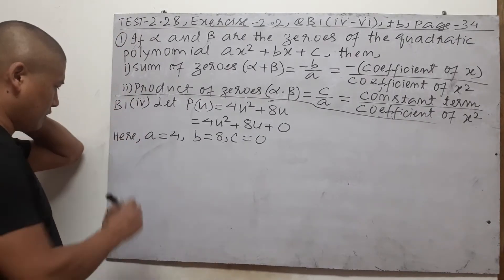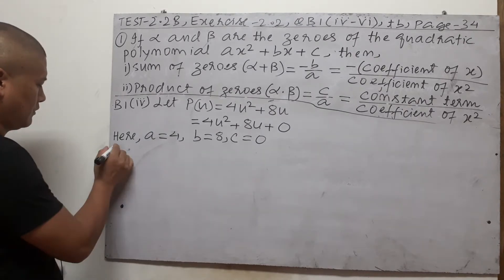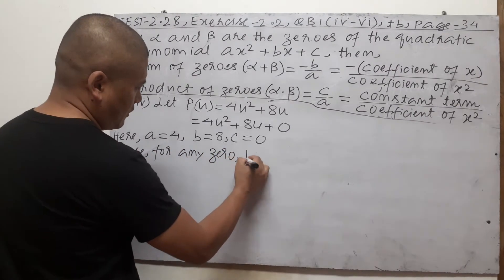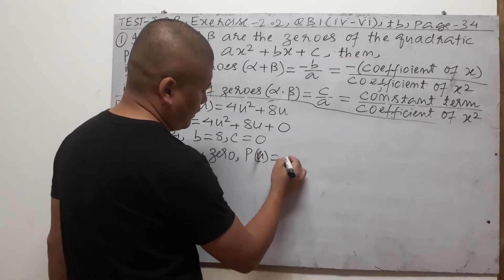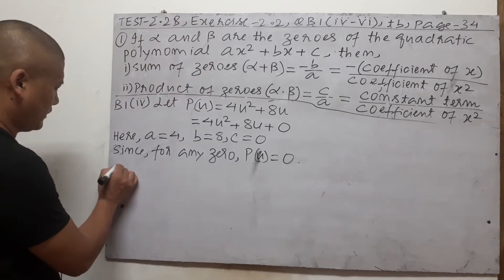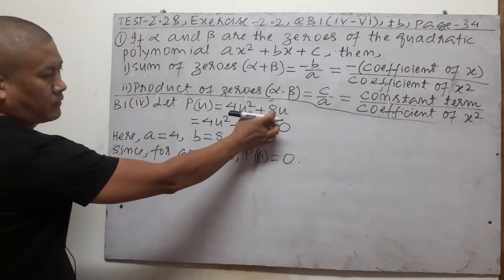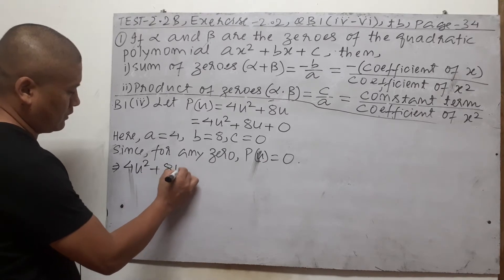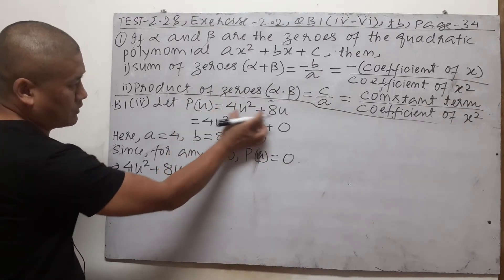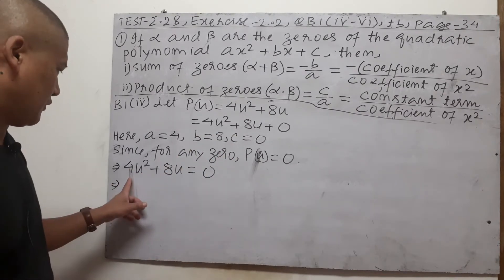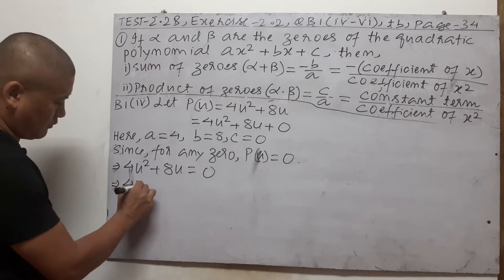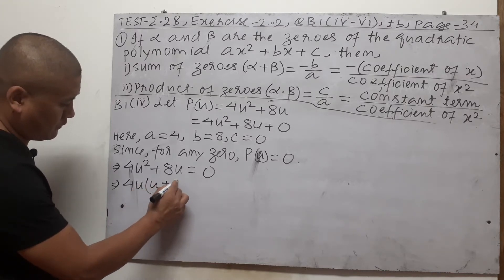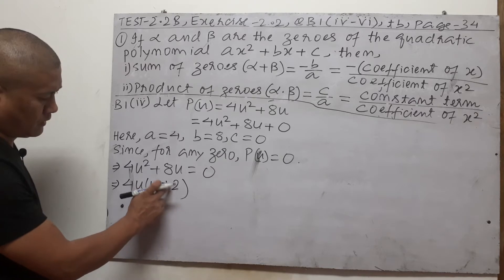The first question asks us to find the roots. For any zero, p of u equals zero. So 4u² + 8u = 0. The highest common factor of 4 and 8 is 4, and u can come out too. Factoring gives us 4u(u + 2) = 0.